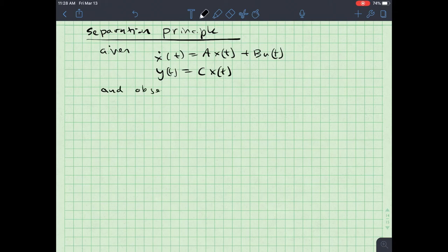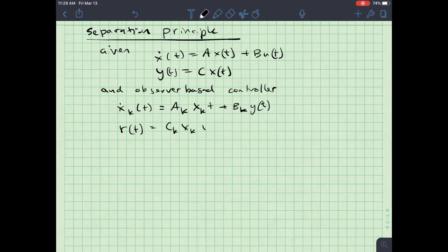And I have an observer based controller which is x dot sub k of t is equal to a sub k x sub k of t plus b sub k y of t. And then I've got r of t is equal to c sub k x sub k of t plus d sub k of y or multiplied by y t. With an order in.